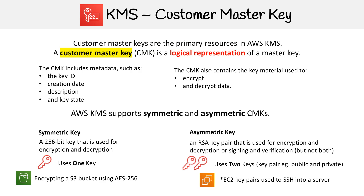The other method is an asymmetric key, where you have an RSA key pair used for encryption and decryption or signing and verification, but not both. The idea is that you have two keys. A great example is EC2 key pairs — you have a public key and a private key. When you download EC2 key pairs, KMS may or may not be involved; if it is, it's probably managed by AWS and transparent to you. From a security perspective, if you have to have two keys — one key matching another — that is technically more secure, whereas if you have one key and that key is lost, it is less secure.